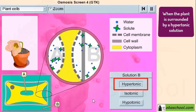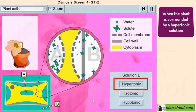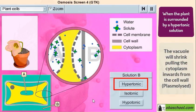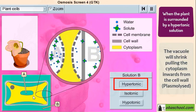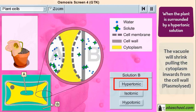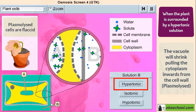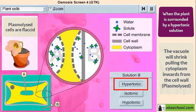So when the plant is surrounded by a hypertonic solution, the vacuole will shrink, pulling the cytoplasm inwards from the cell wall. Hence, the cell is then plasmolyzed. Plasmolyzed cells are usually flaccid.